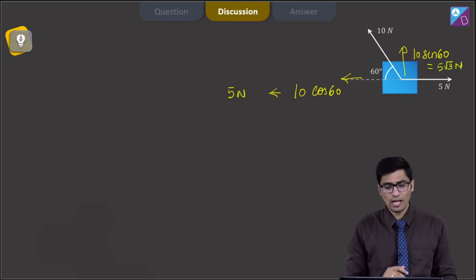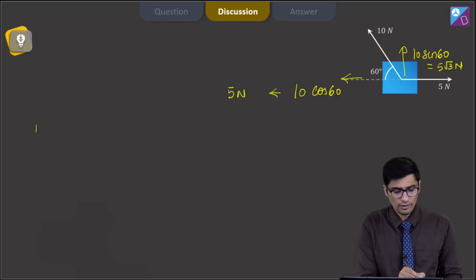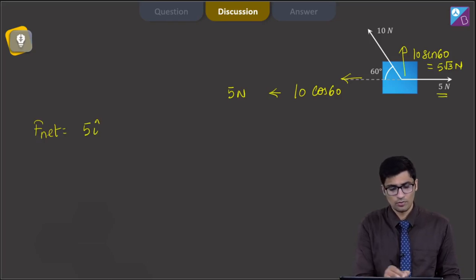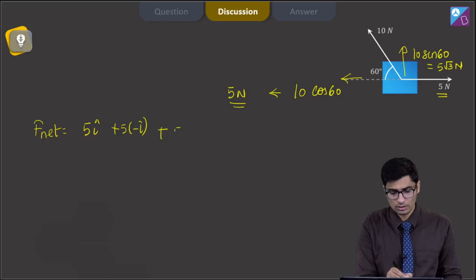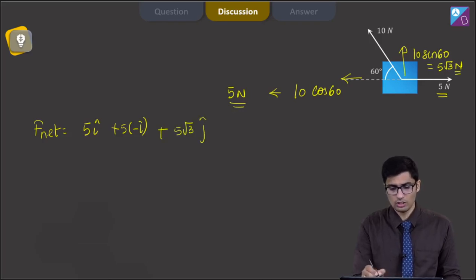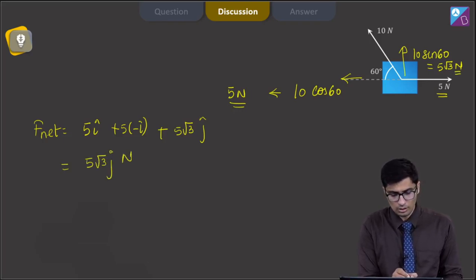Now if we add all the forces, the net force will be equal to 5 î cap force plus 5 minus î cap force plus 5√3 ĵ cap force. The net force turns out to be 5√3 ĵ cap Newton.